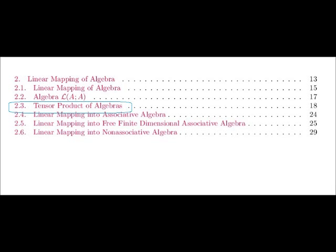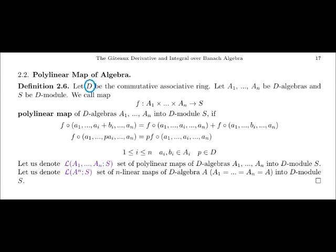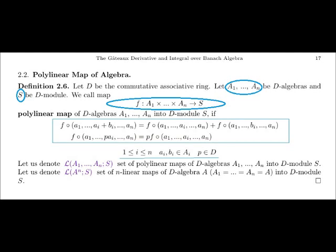In this lecture, using the definition of linear mapping, we consider tensor product of algebras. I will start this lecture from the definition of polylinear map. Let D be the commutative associative ring. Let A1, ..., AN be the algebras and S be the module. We call map F of the algebras A1, ..., AN into the module S a polylinear map, if the map F is linear with respect to each argument.